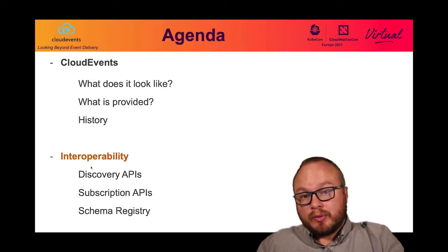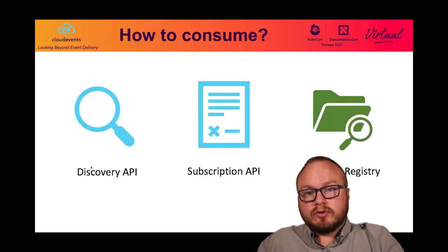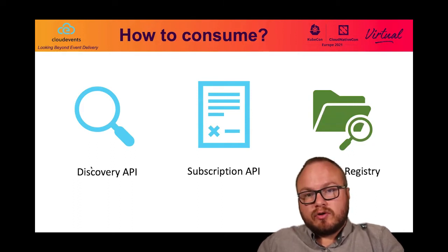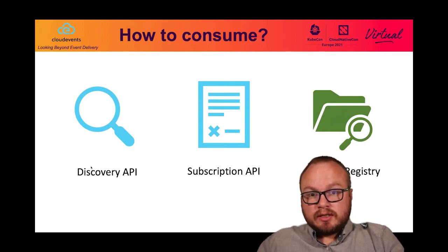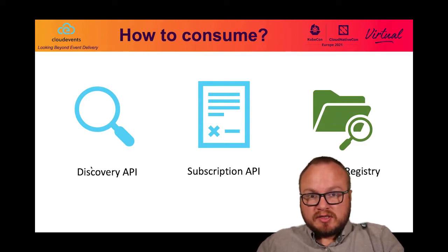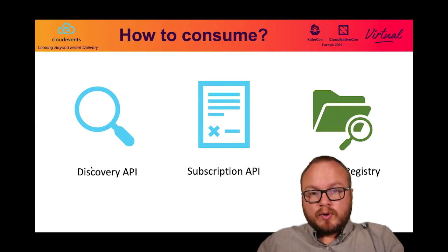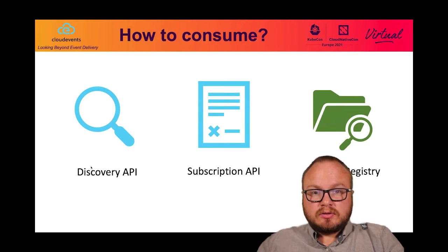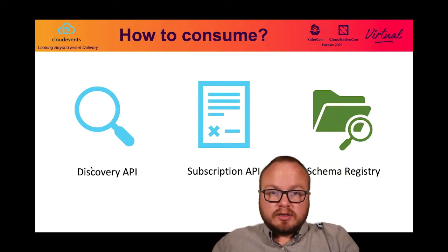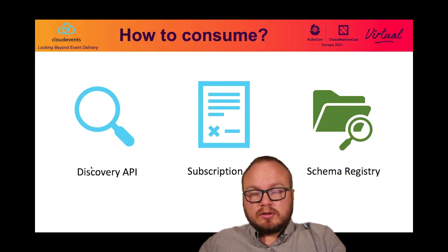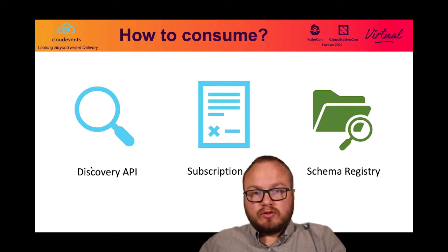Interoperability is basically about how to consume events. We already defined what an event looks like and what it contains. But we still need to discover the events that are emitted by our systems, we need a way to subscribe to those events, and ideally to have one place to publish the schema that defines our events.